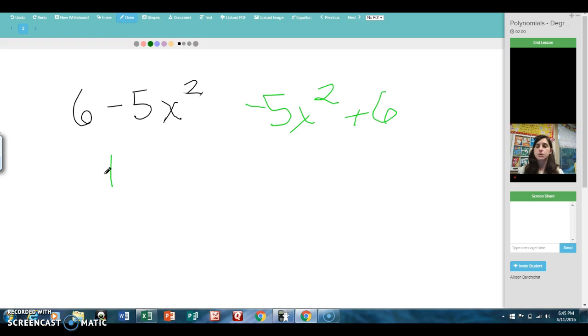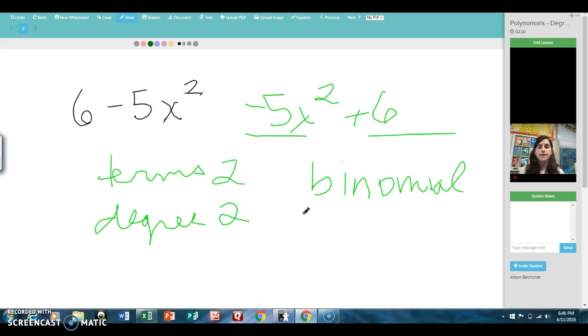So this has two terms. Remember, terms are separated by addition or subtraction signs. So here's one, here's two. The degree is also 2. That's the biggest exponent that we see in the problem. When something has two terms, we call it a binomial. And because it is squared, it is a quadratic binomial. The leading coefficient in this problem is negative 5. And the constant term, the one with no variable associated with it, is 6.